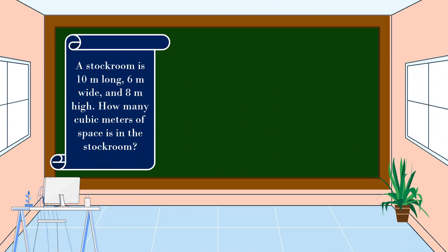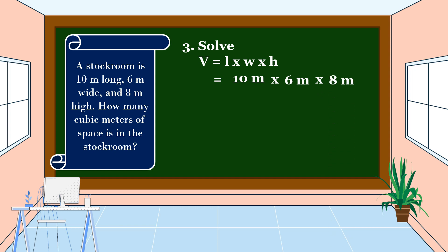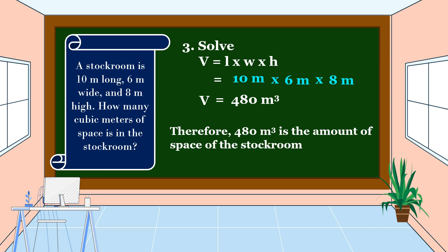We have already a plan. The next step is we are going to carry out the plan. Let's solve the problem using the formula: Volume is equal to length times width times height. The length is 10 meters, the width is 6 meters, and the height is 8 meters. 10 meters times 6 meters is equal to 60 square meters. Times 8 meters, the volume is 480 cubic meters. Therefore, 480 cubic meters is the amount of space of the stock room.